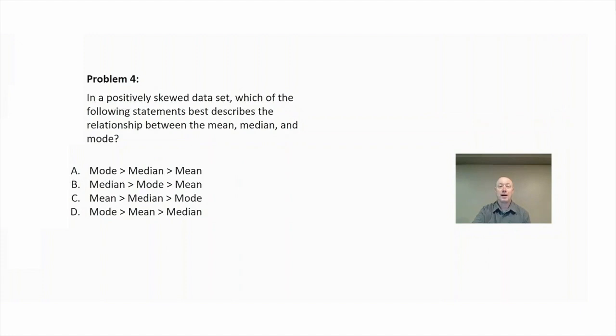Problem four: in a positively skewed data set, which of the following statements best describes the relationship between the mean, median, and mode? So what do we mean by a positively skewed data set? If we think about our normal distribution curve in a positively skewed data set, the values are going to be clustered on the lower end, and it's going to have a longer tail on the higher values.